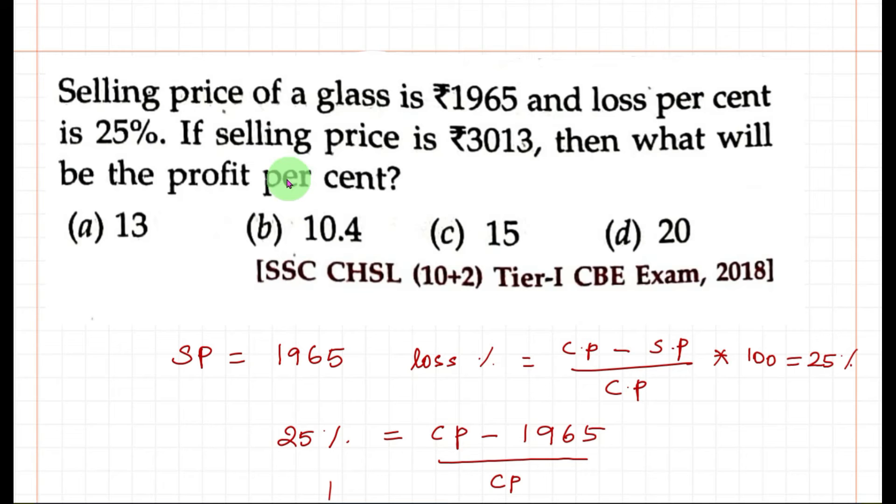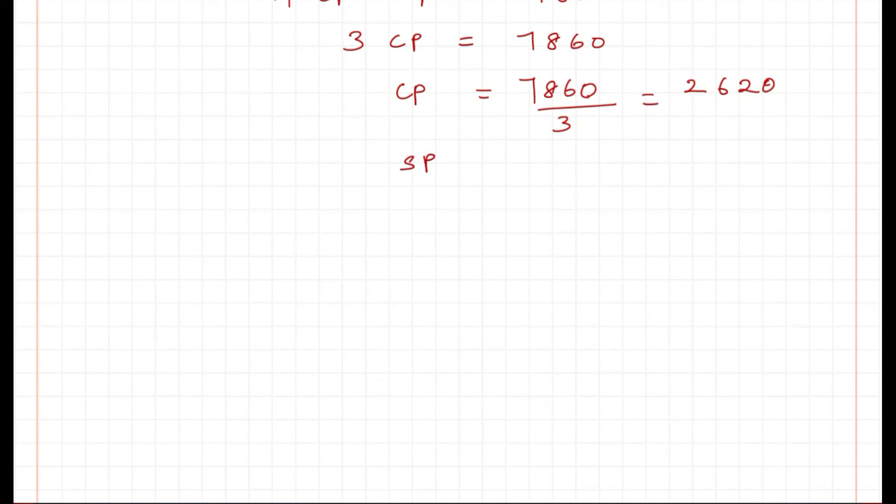Now the next part of the question: if the selling price is Rs.3013. So now cost price is 2620 and selling price equals Rs.3013.